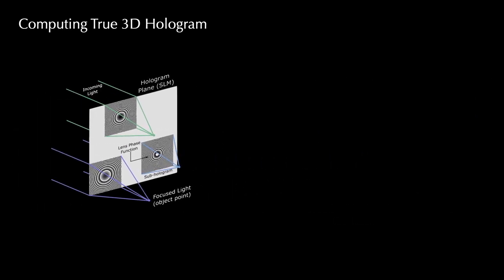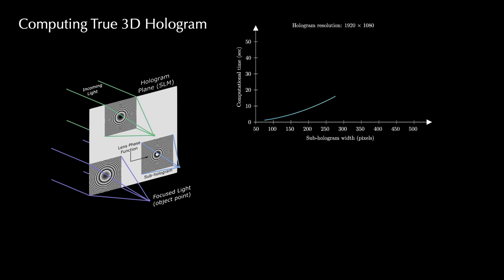This simulation requires running spatially varying large kernel convolutions, and performing this for millions of points is computationally expensive even on GPUs, and currently too slow for real-time applications.